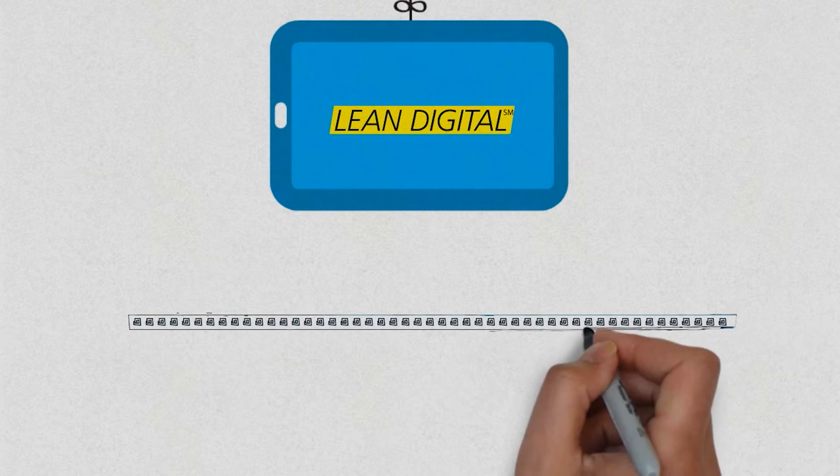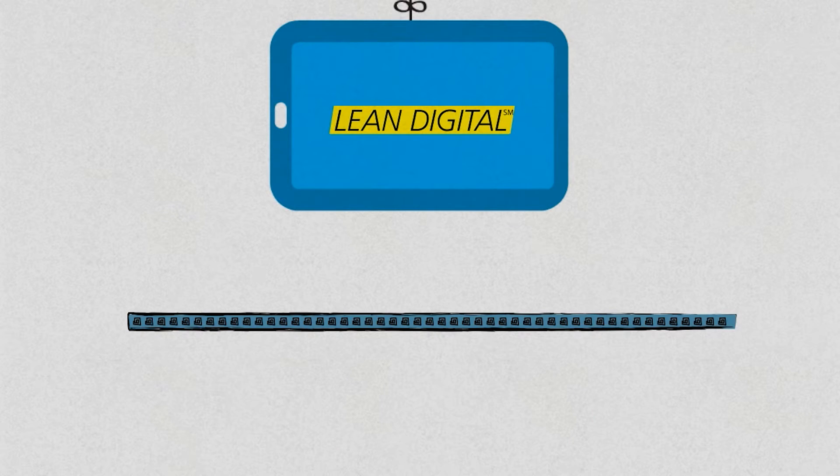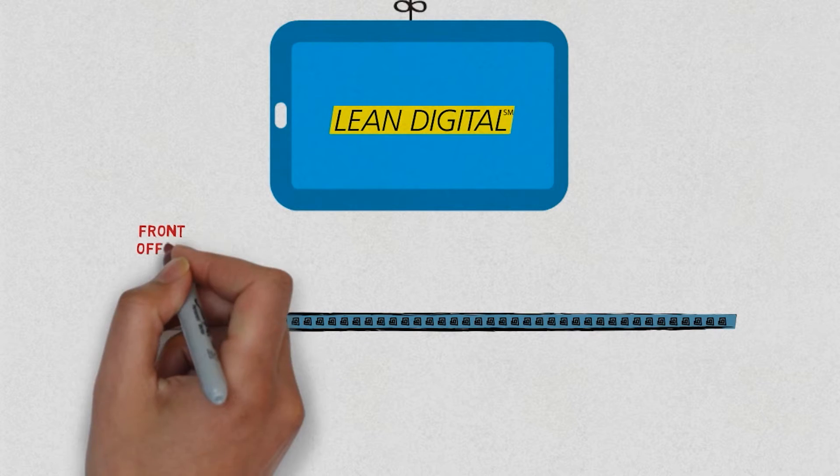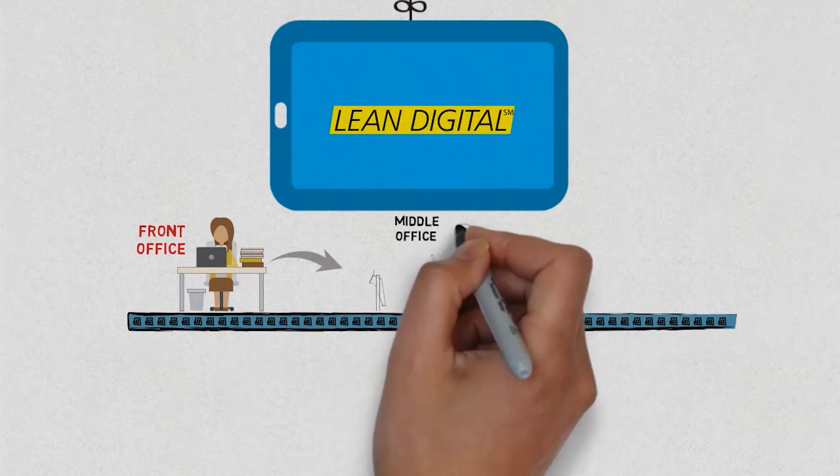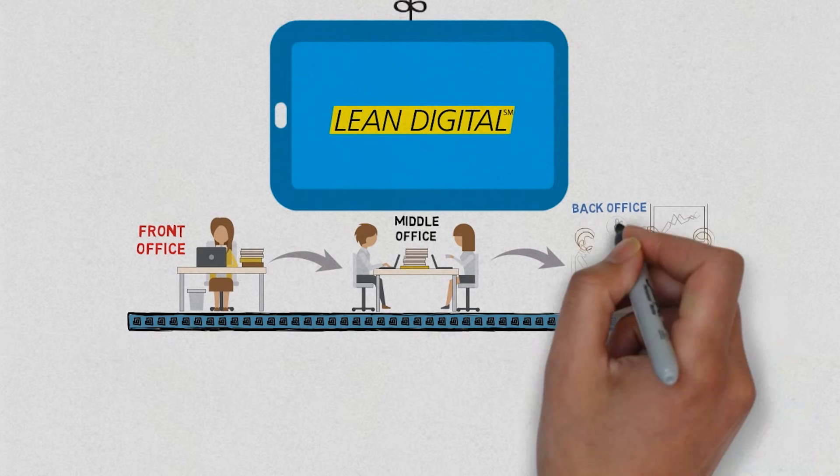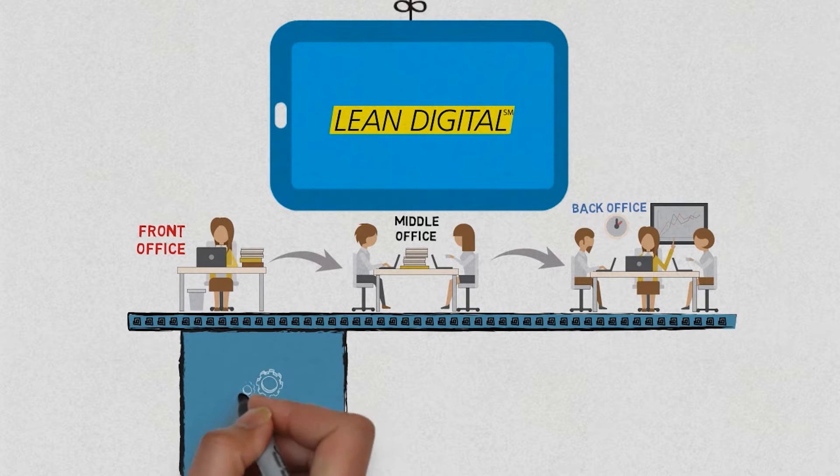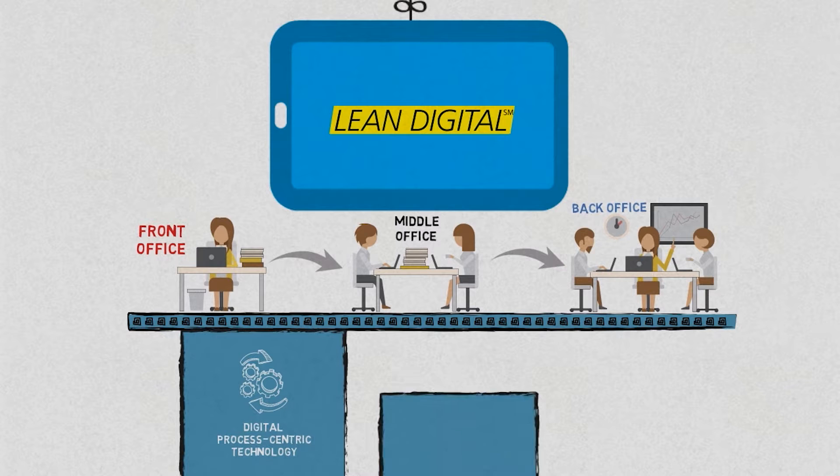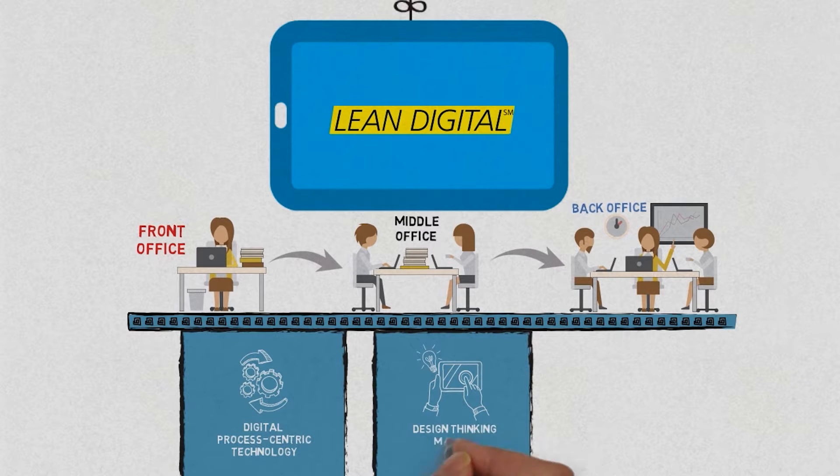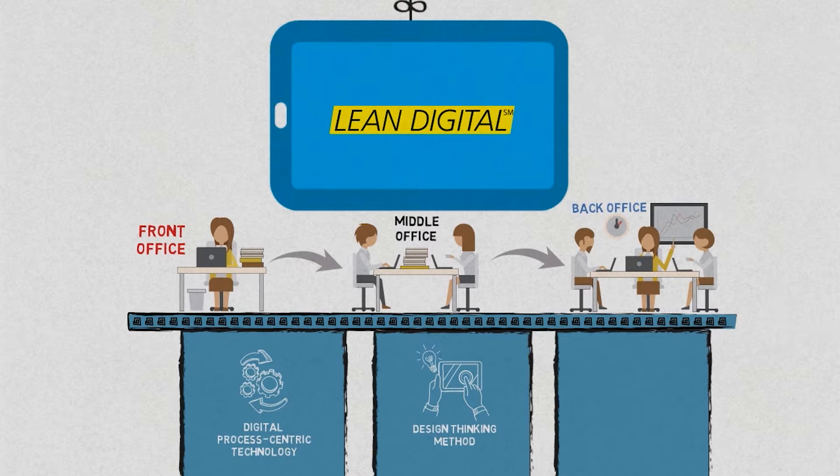Genpact's lean digital approach drives digital impact by architecting how enterprises run from the front-end facing clients to the middle and back-office operations. It aligns digital interventions by harnessing three complementary domains: digital process-centric technologies, design thinking methods focused on the end customer, and lean principles that focus on agility informed by analytic insights.